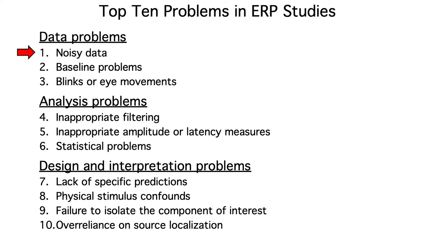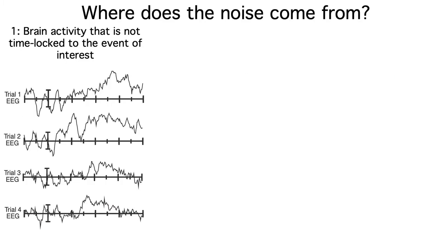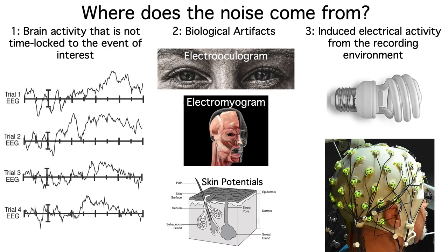Problem number one is noisy data. By the time the voltages get from the neurons to the scalp, they're pretty small and they're embedded in lots of noise. We have EEG activity that isn't related to our stimulus, like alpha band oscillations. We have biological artifacts coming from the eyes, the muscles, and the skin. And we have electrical devices in the environment that induce the flow of current through the electrodes.